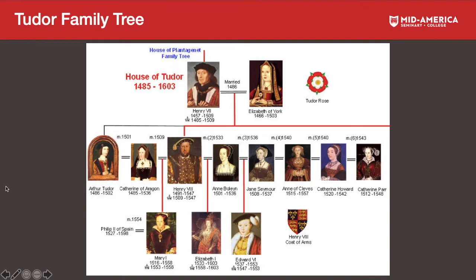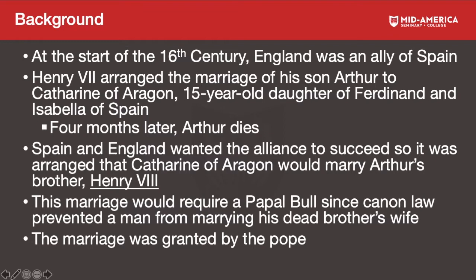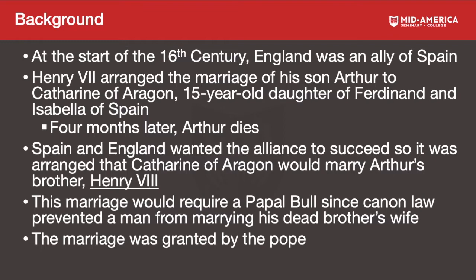This remarriage required a papal bull since canon law prevented a man from marrying his dead brother's wife. Both Spain and England were Catholic, so the Pope needed to authorize this marriage. The Pope ends up granting the bull, and Henry the Eighth and Catherine of Aragon are married.